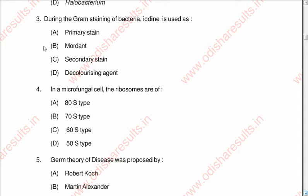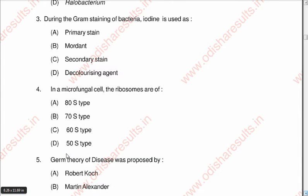The correct answer is B: mordant. Question four: In a micro fungal cell, the ribosomes are of A: 80S type, B: 70S type, C: 60S type, D: 50S type. The correct answer is A: 80S type, since it is a eukaryotic cell.